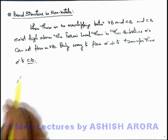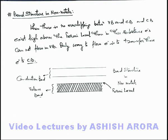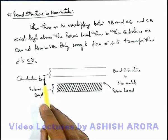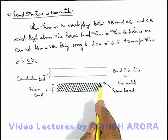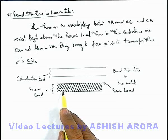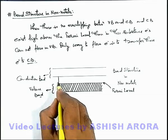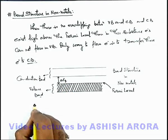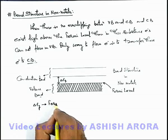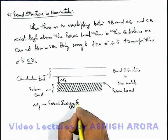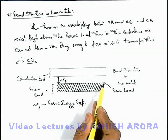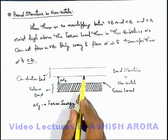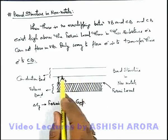Let's discuss the same thing with the help of the band structure of non-metals. In this diagram you can see the band structure of non-metals — this is the valence band and this one is the conduction band. There is no overlapping between them, and this is the Fermi energy level up to which electrons are filled in the valence band. There exists an energy gap between the Fermi energy level and the conduction band, denoted by ΔEg, termed the Fermi energy gap — the minimum energy required for electrons at the Fermi level to shift to the conduction band, after which they can flow and conduct electricity.